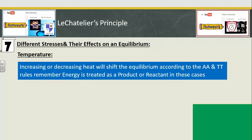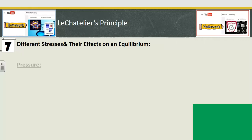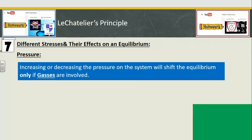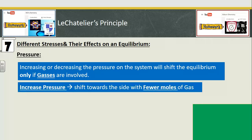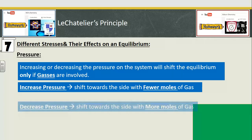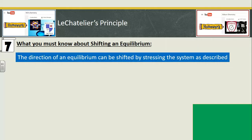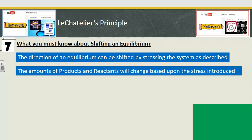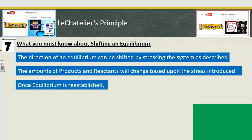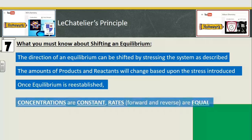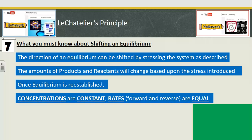For temperature, you shift according to the AA and TT rules — energy is treated as a product or reactant. You shift away from the energy that's added and towards the energy that's taken away. For gas and pressure: shift away from the side with more gas if you add pressure, and shift towards the side with more gas if you decrease pressure. Increase pressure — shift towards the side with fewer moles of gas. Decrease pressure — shift towards the side with more moles of gas. Once equilibrium is reestablished, concentrations become constant again and the rate of forward and reverse becomes equal.